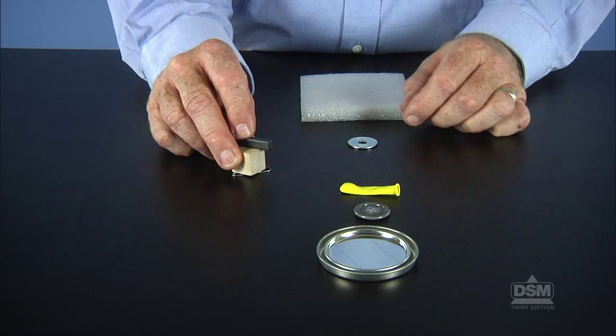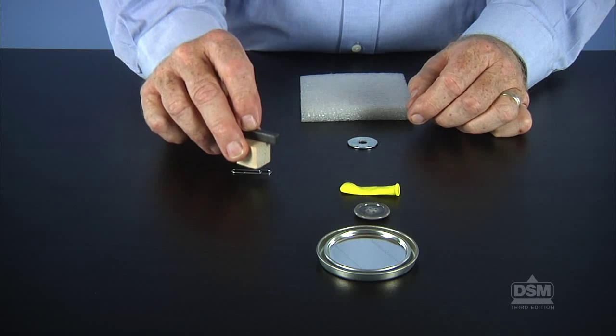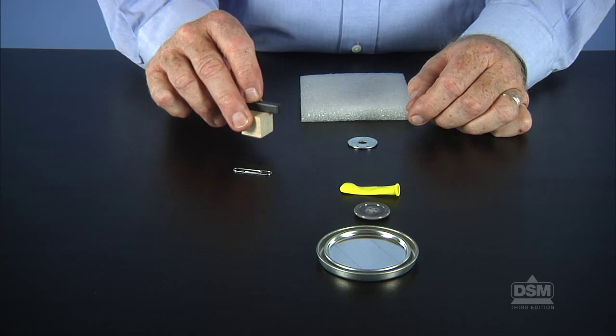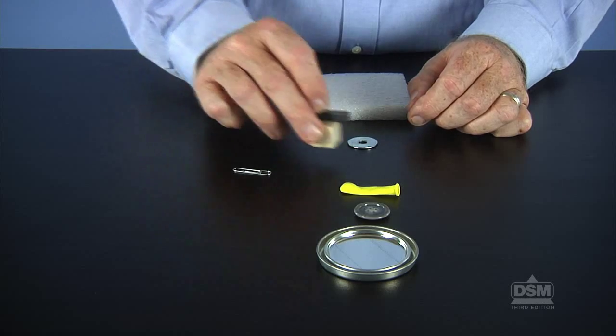Thick, non-magnetic objects, such as the wooden cube, may have appeared to block the force, but it was actually just the thickness of the object that kept the paper clip outside the range of the force of the magnet.